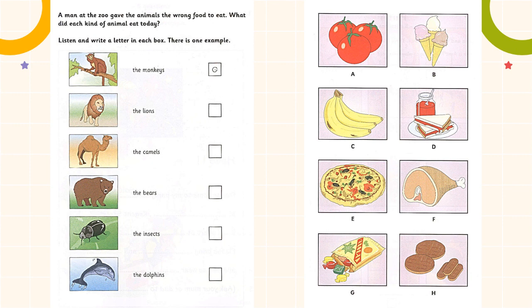Did you have a good day at the zoo? Yes, but a new man started work today and he gave the animals all the wrong food. The monkeys were very happy — he gave them sweets for their lunch. Oh no! Can you see the letter G? Now you listen and write a letter in each box.